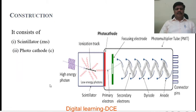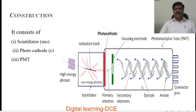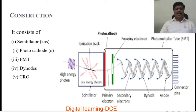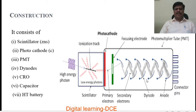Construction. The scintillation detector consists of a scintillator — this may be ZnS or anthracene or any scintillating material — and also a photocathode, and an assembly of dinodes, that is a photomultiplier tube (PMT). The photomultiplier tube consists of a photocathode and an assembly of dinodes to accelerate and multiply the number of photoelectrons produced by scintillation of light via the photoelectric effect. There is also a CRO (cathode ray oscilloscope) to analyze the pulse and measure the counts, a capacitor, and high tension batteries connected to the dinodes.